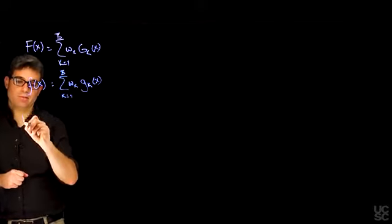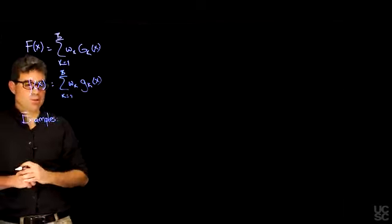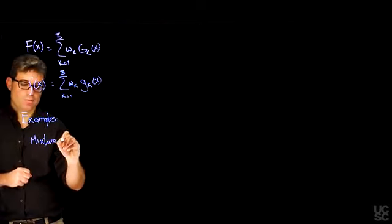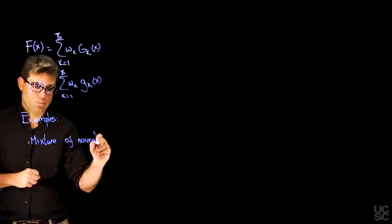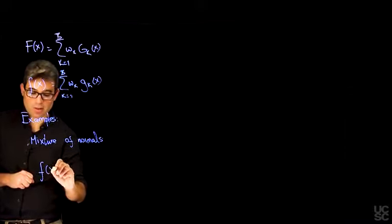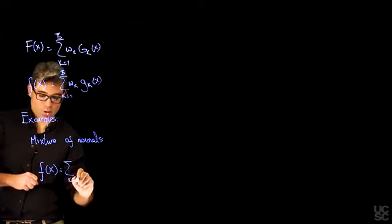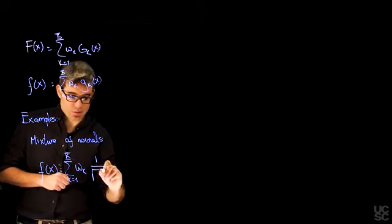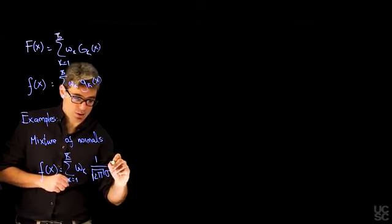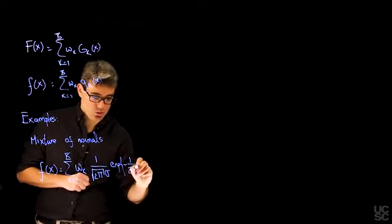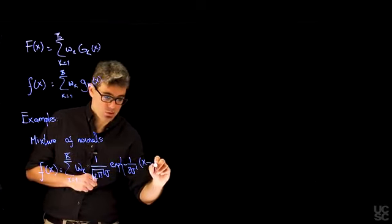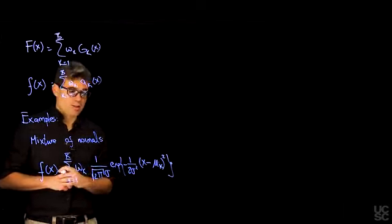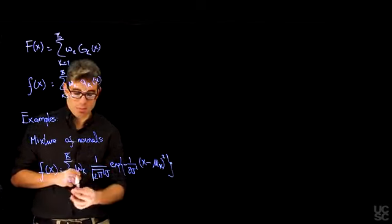Let's consider some examples of mixture models. One we will encounter repeatedly is a mixture of normal distributions. In this case, the density takes the form of a sum from 1 to K of the weights times the normal density. In one particular example, only the mean of each normal depends on the component index k, while the variance is the same across all components. This is called a location mixture of normals.